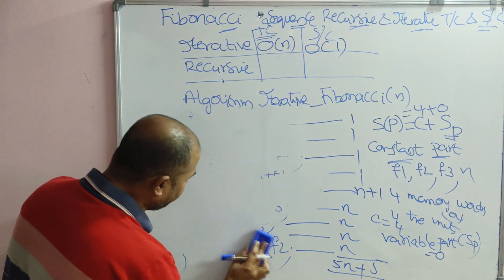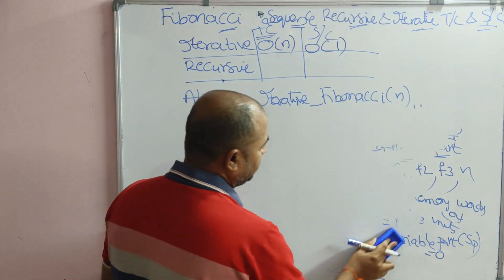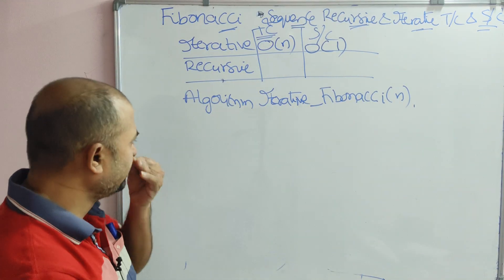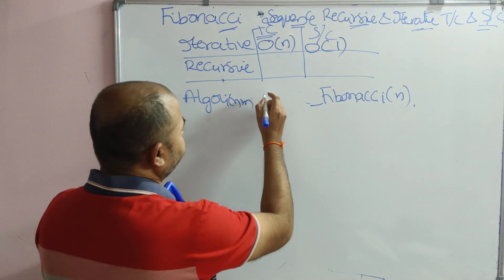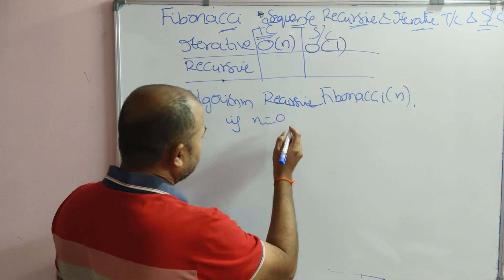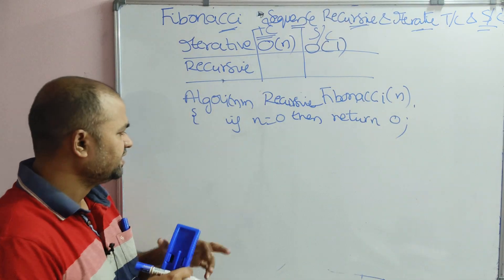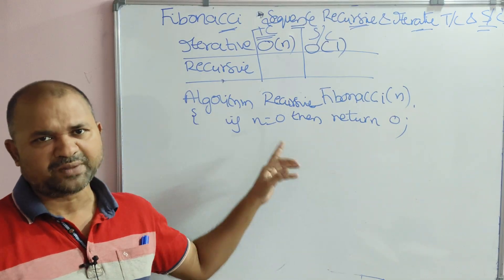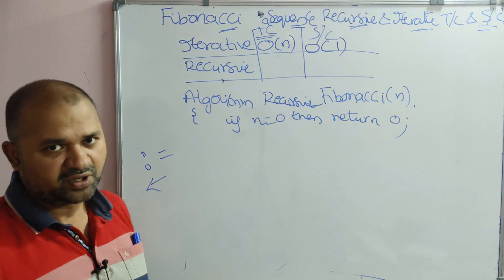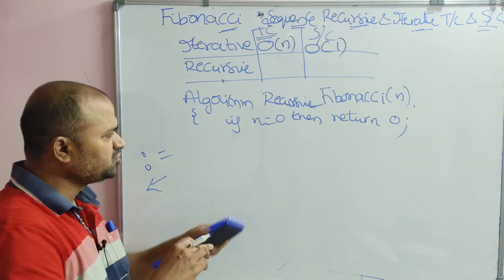Now let us focus on the recursive algorithm. Algorithm: recursive_Fibonacci(n). If n is equal to 0, then return 0. In algorithm notation, the assignment operator is colon-equals or reverse arrow, while the equality operator is single equals. So: if n equals 0, return 0.